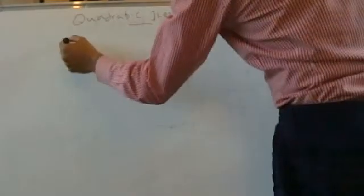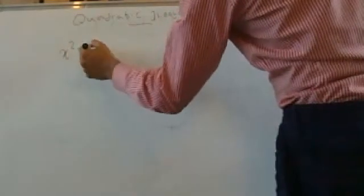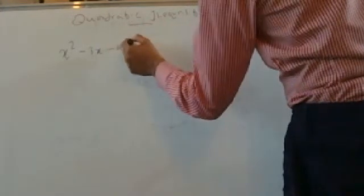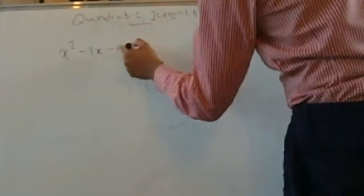Today we're going to do quadratic inequalities. A lot of people are confused about this topic, but I think it's a very simple question — there's a particular method you need to follow. The way I would do it is by sketching a graph. So let's say we have the quadratic inequality x squared minus 3x minus 4 is less than 0.